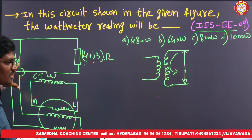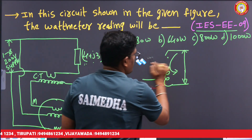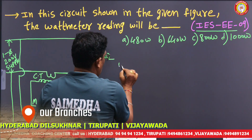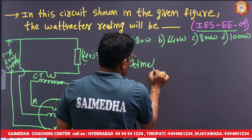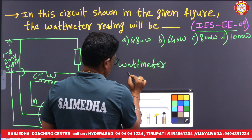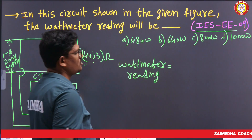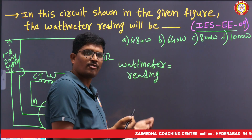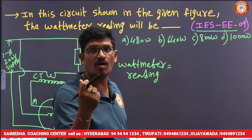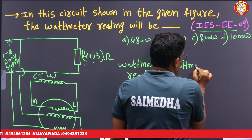So what is the wattmeter reading in this case? What is the formula for wattmeter reading? Generally, a wattmeter measures AC power. The formula for AC power is V·I·cosφ. Simply, the voltmeter acts as the potential coil in this wattmeter.